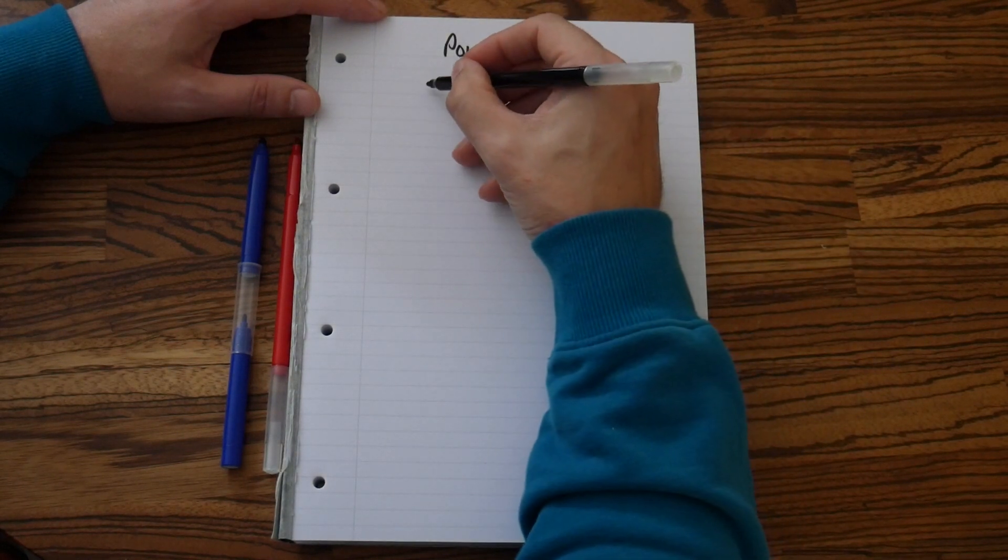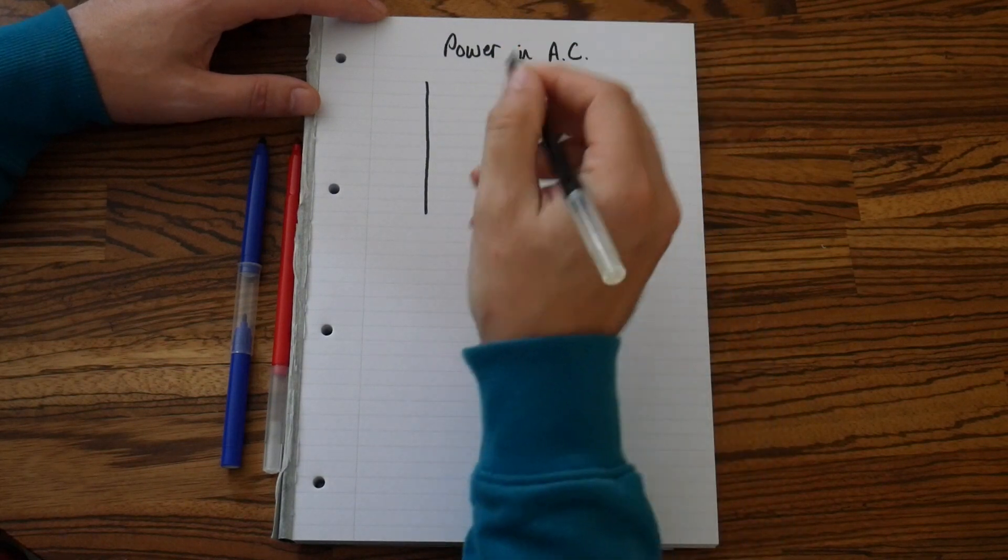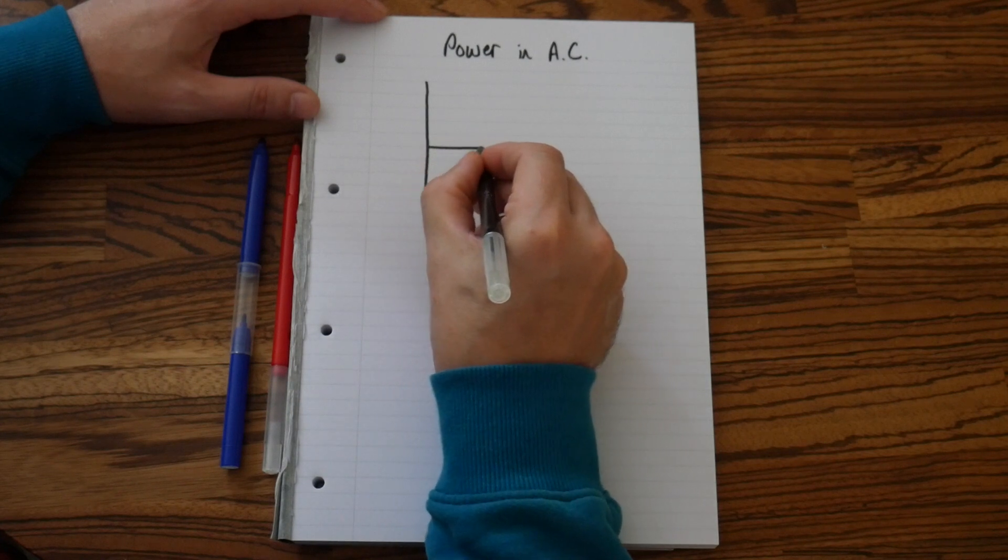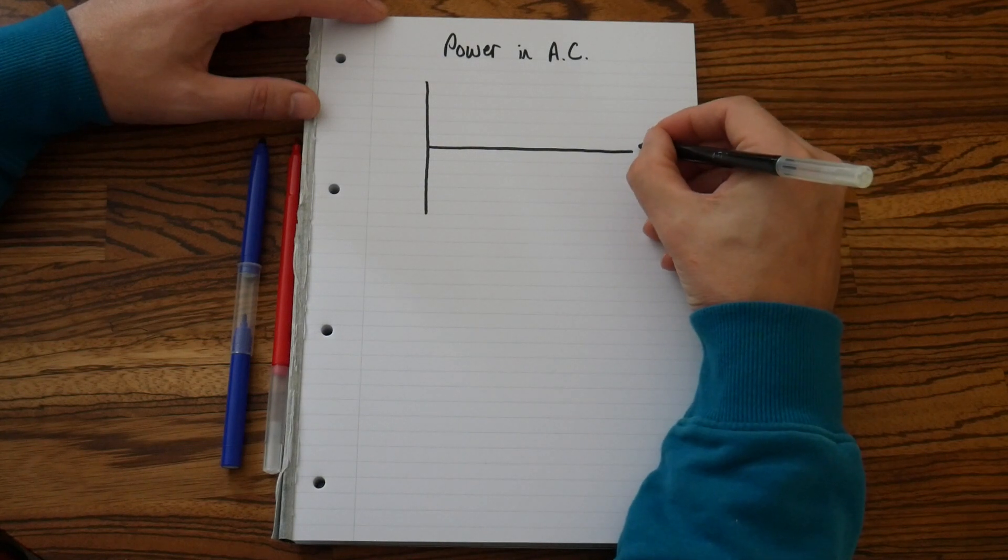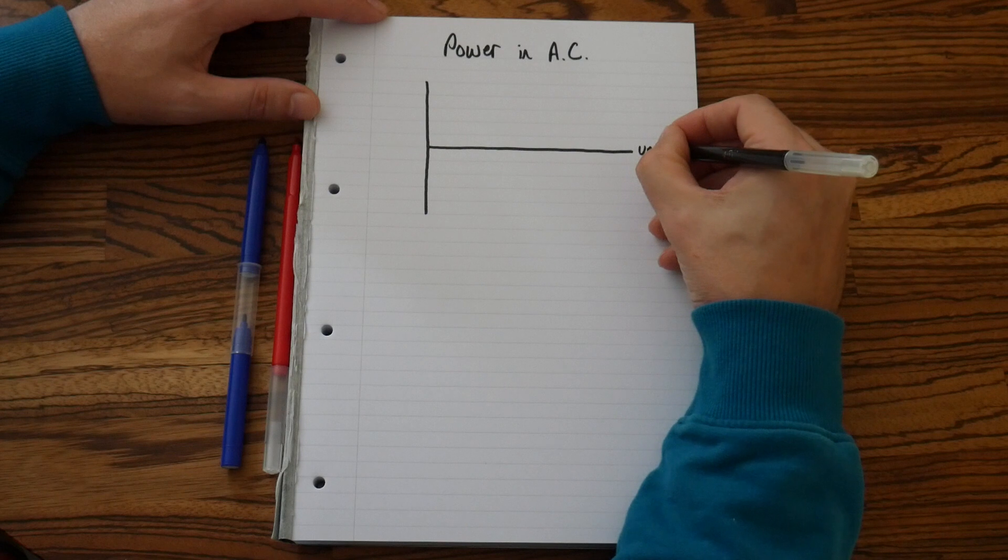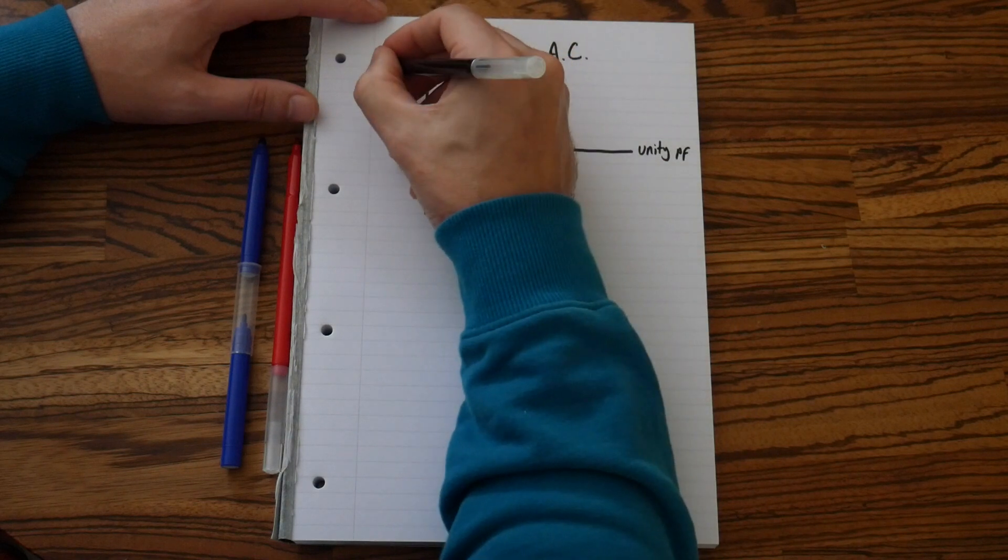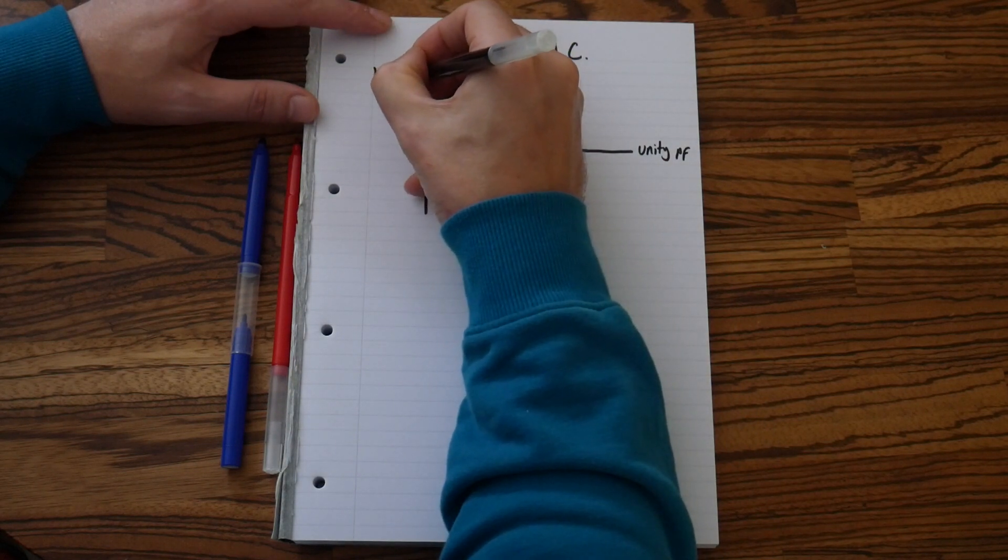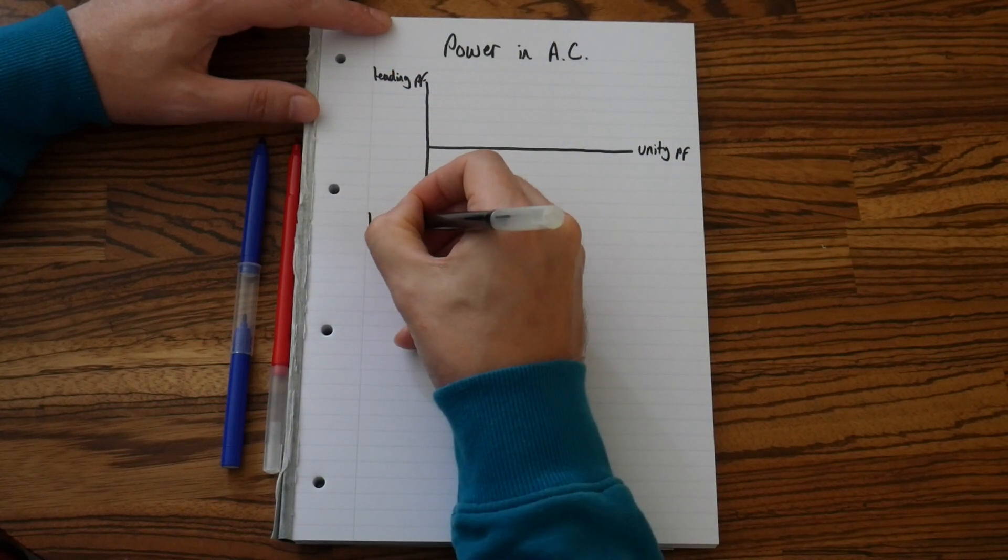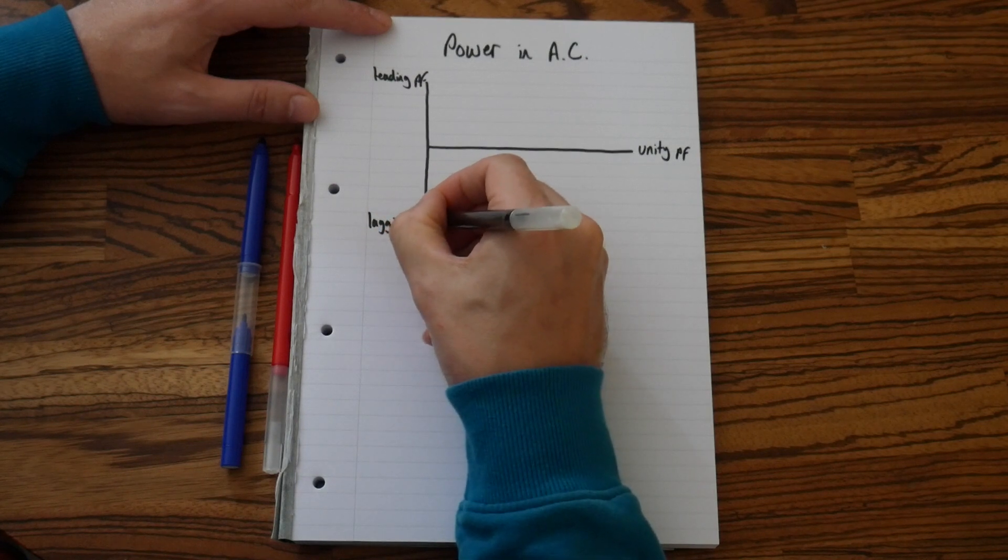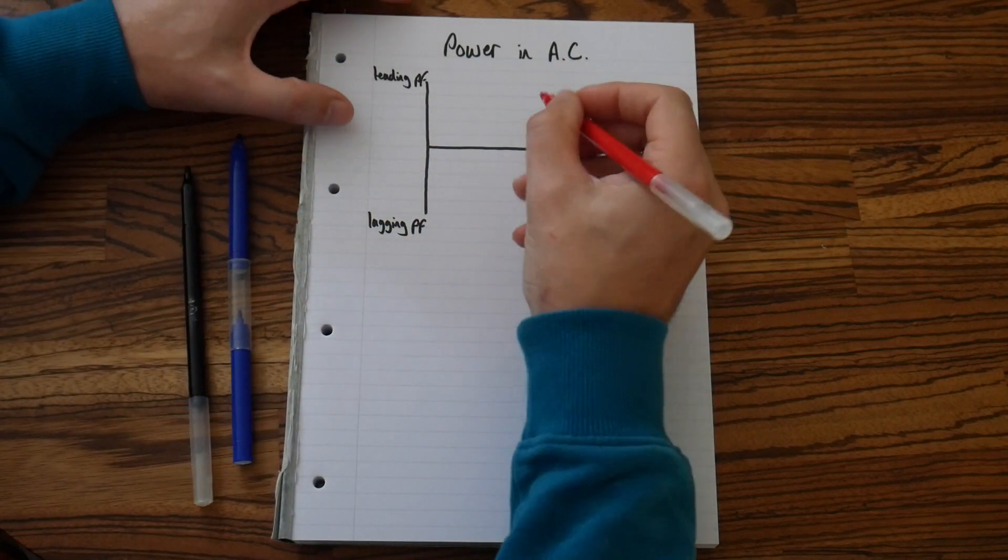Now let's draw this. Hopefully you will use a ruler—I am not. So if we draw this and write unity PF, and a leading power factor, lagging power factor, and then the power triangles that you may well be asked to draw.